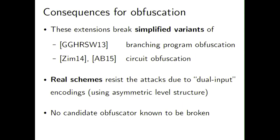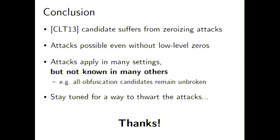To conclude: CLT13 suffers from zeroizing attacks applicable in many settings, even without low-level zeros, though not all settings are covered. These attacks extend to break simplified variants of proposed obfuscation candidates, but the real schemes are not susceptible due to their dual-input structure. None of the candidate obfuscators are known to be broken, but the attacks do point to where security is coming from. Tancrede will next describe CLT15 and how it resists these attacks. Thank you.